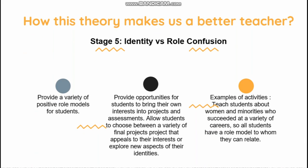The last teaching application is during stage five, identity versus confusion, for teenagers and adolescents. Teachers should provide a variety of positive role models for students and provide opportunities for students to bring their own interests into projects and assessments. Teachers should allow students to choose between a variety of final projects that appeal to their interests or explore a new aspect of their identity. An example activity is to teach students about women and minorities who succeeded in various careers, so all students have a role model to whom they can relate.